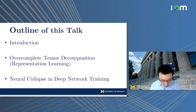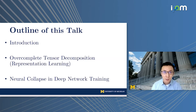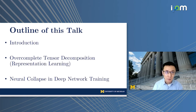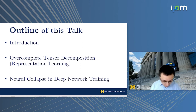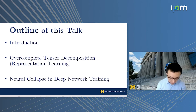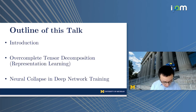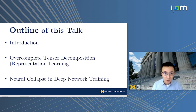This talk will be partitioned into three parts. First, I will give a brief overview of geometric analysis of non-convex optimization. Then we'll discuss about over-complete tensor decomposition, which relates to a lot of representation learning problems. And lastly, I will discuss about the neural collapse phenomenon in the last layer representation learned of neural networks.